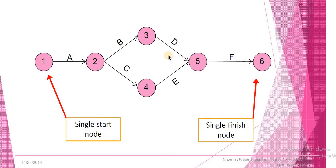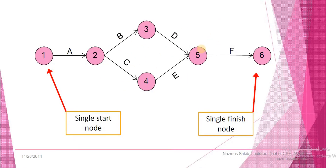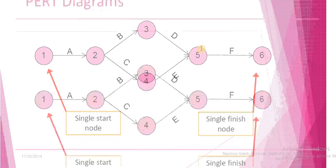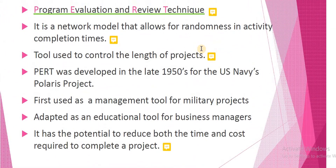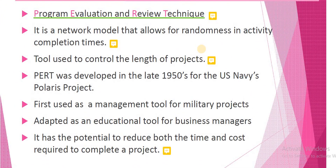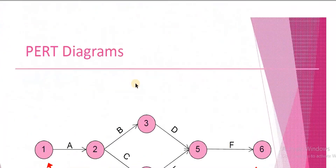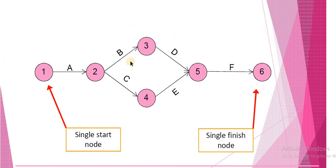So this is what a PERT diagram looks like. In this tutorial we have learned the definition of a PERT diagram, why a PERT chart is a useful tool in project management, some basic history of the development of PERT diagram, and seen an example of what a PERT diagram looks like. In the next tutorial we are going to learn about the classification of PERT. Thank you.